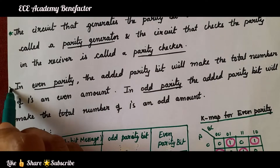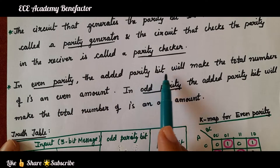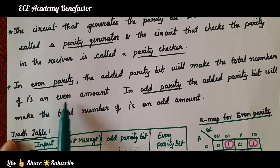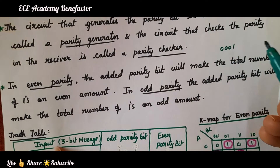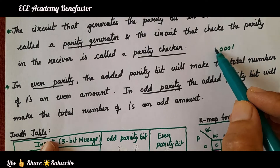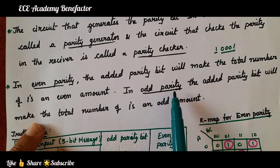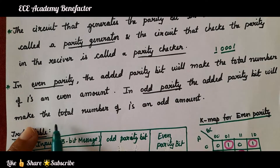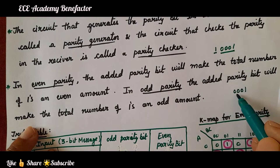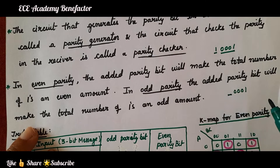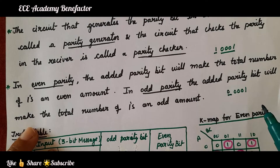There are two types of parity: even parity and odd parity. In even parity, the added parity bit will make the total number of ones an even amount. For example, if the message is 0 0 1 and we want even parity, we add one more 1 to make it even. In odd parity, the added parity bit makes the total number of ones an odd amount. For example, if the binary message is 0 0 0 1, we add 0 to keep the count odd.